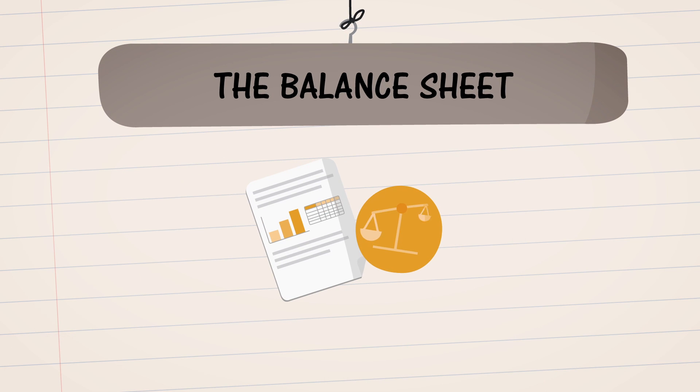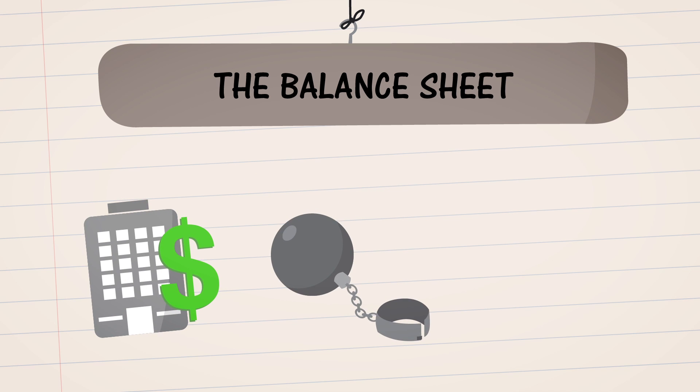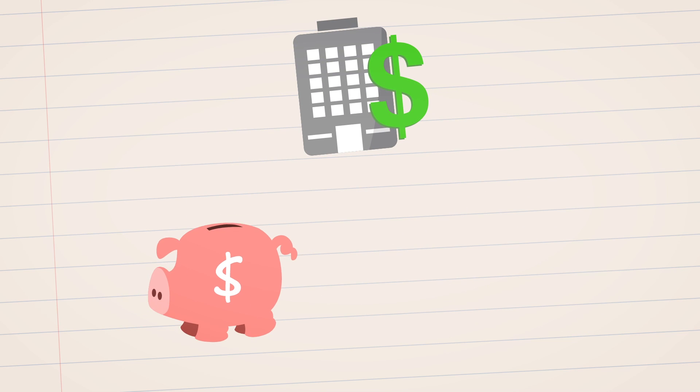First, let's start with the balance sheet. This summarizes a company's assets, liabilities, and equity at a specific time. Assets are broken down into two categories.